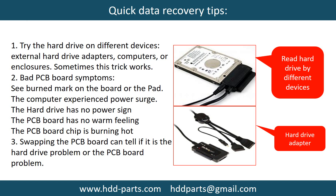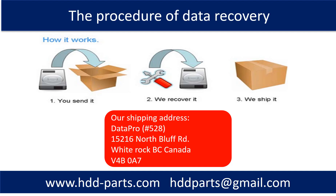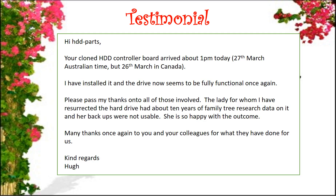There are some simple ways to recover data from a hard drive. One of them is to try to read the hard drive by different devices, like different external hard drive adapters, computers, or enclosures, because different devices use different ways to read a hard drive — sometimes this trick works. Another way is swapping the hard drive PCB board, which can fix the problem caused by the PCB board. There is a cost in swapping the PCB board, but it is way cheaper than sending the hard drive to a data recovery firm. This picture shows the procedure of how we do data recovery for our clients: first, the client sends their hard drive to us; second, we do data recovery; third, we ship back the data to our clients.